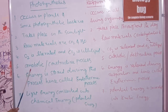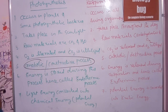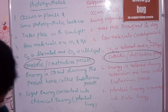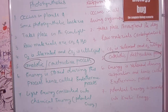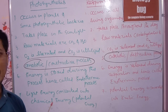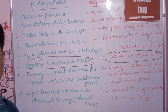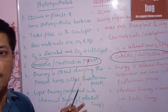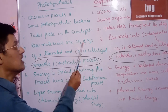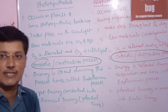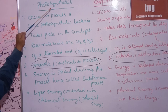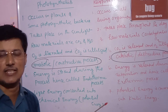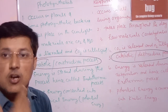Photosynthesis is an anabolic process — this is an important point. Anabolic is also known as a constructive process, involving synthesis and making things together. Metabolism has two phases: anabolism and catabolism. Anabolism is the constructive process — carbon dioxide and water combine to form carbohydrates. That is photosynthesis. Anabolic means synthesis, and the raw materials are carbon dioxide and water.